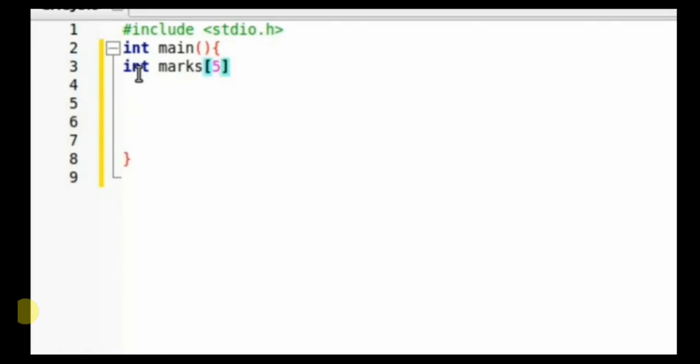Once we declare it, it's also possible for us to assign the values of the array at the same time. As you can see, our array is of size five, and therefore this allows us to assign five integers. It is of integer type.